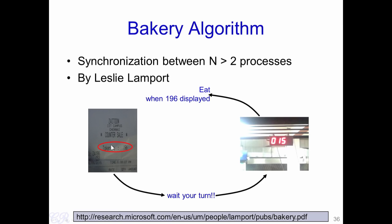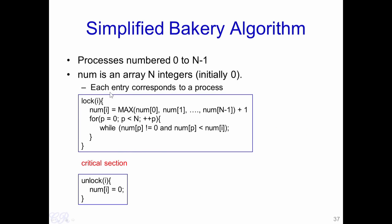From a synchronization aspect, we are trying to synchronize the usage of a particular counter. All people who have such a token should wait until their number is called, then sequentially each person goes to the counter and collects whatever they want. We will see how the Bakery algorithm is used to solve the critical section problem.